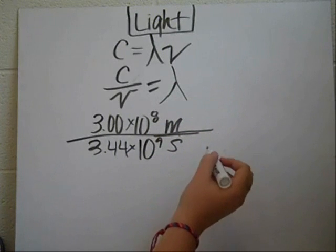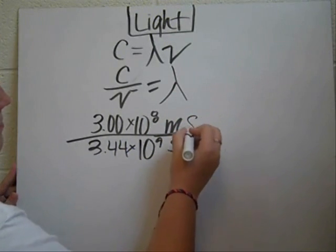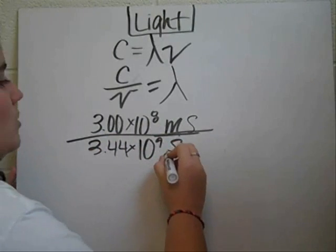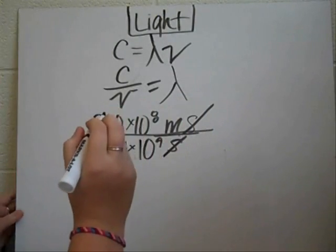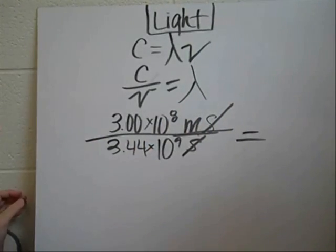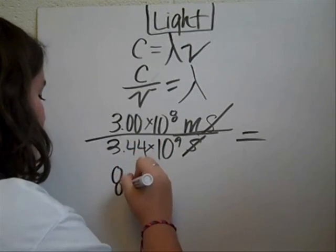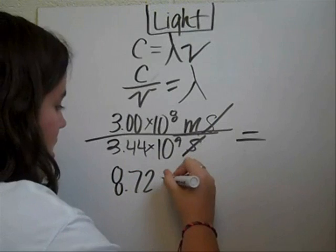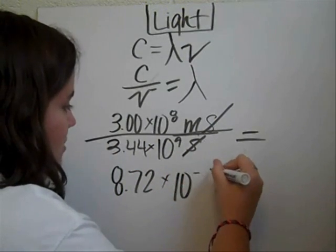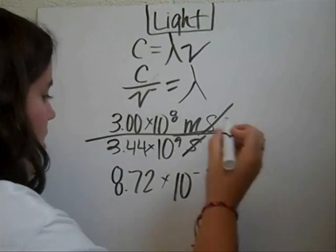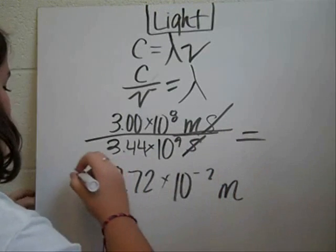And inverse seconds means that it would be on top. So the seconds would now cancel out, and it would just be meters. And when you plug this into your calculator, you'll get 8.72 times 10 to the negative second meters. And this is equal to your wavelength.